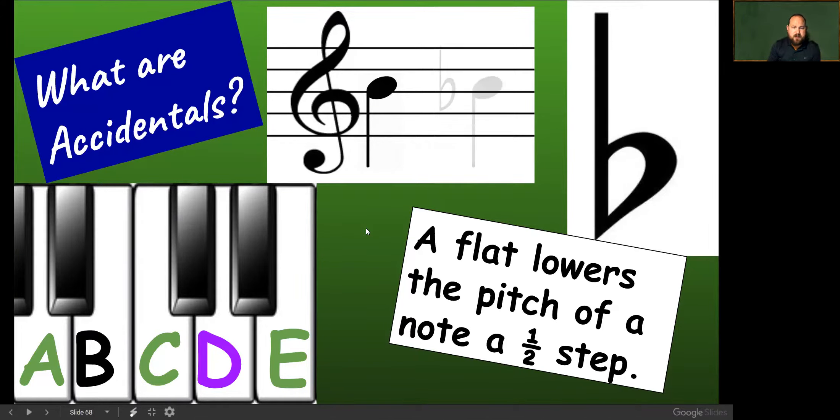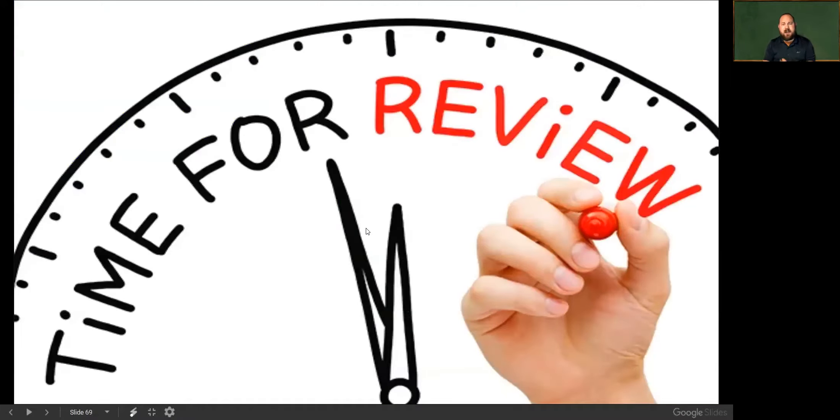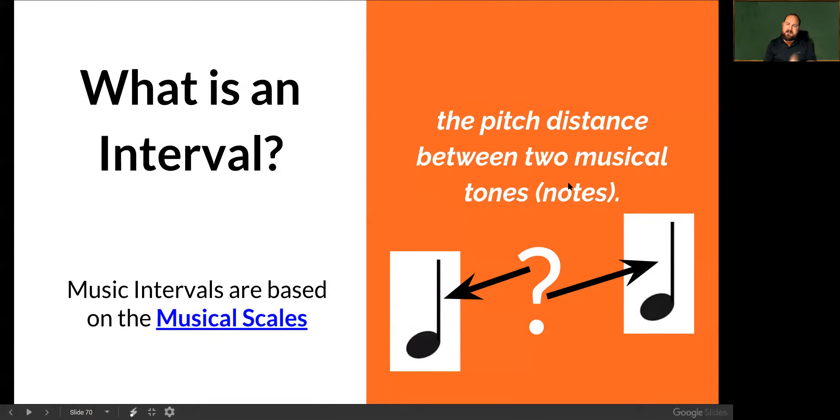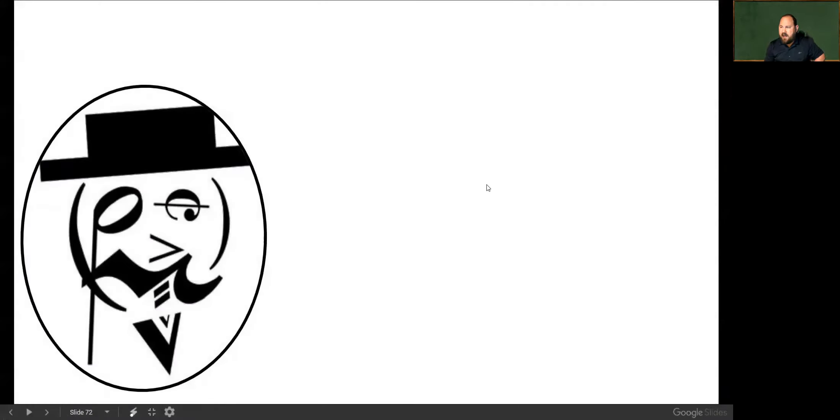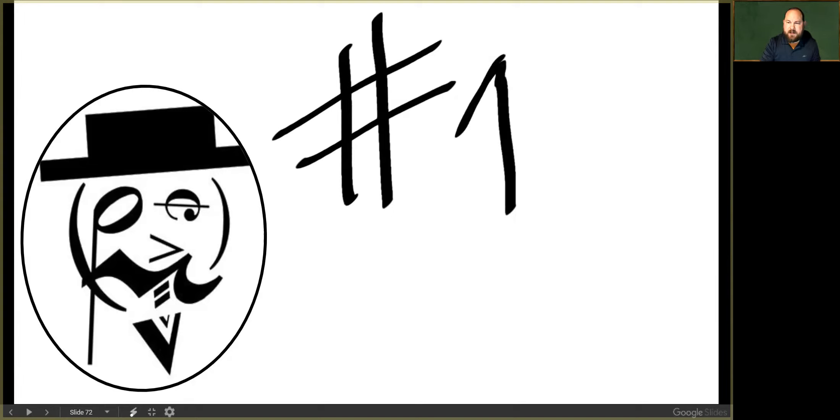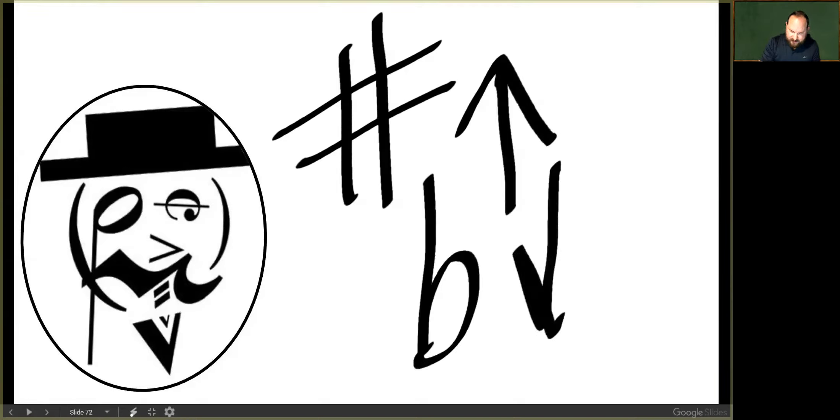So we have gone over sharps and flats. And so before we go away, let's just quickly review: an interval is the distance between two pitches. Intervals are based on scales and scales are organized sequences of notes. And because of that, we have an order and predictability to it. And the last thing is we've talked about that an accidental alters the pitch of a note. And in this case, we have two different kinds of alterations. We have our sharp that raises the pitch of a note. And then we have our flat that lowers the pitch of a note.